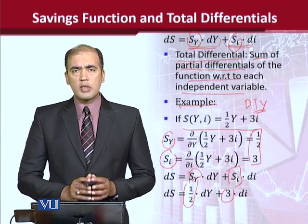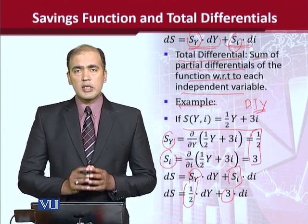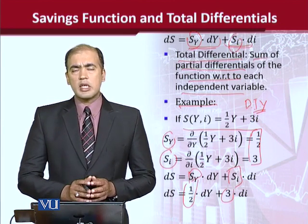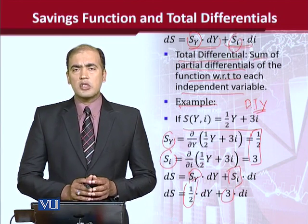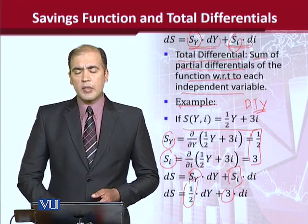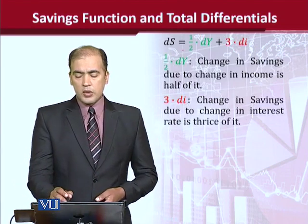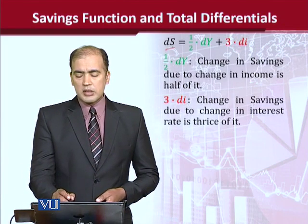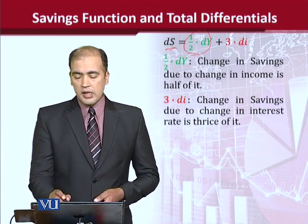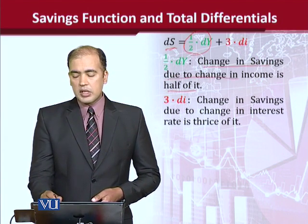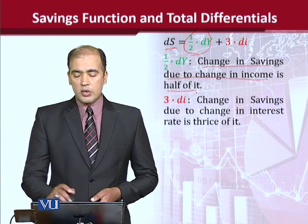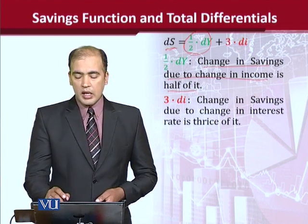In this way, we are able to develop an expression that guides us on how national income and interest rate contribute to changes in savings. To see in more detail: the change in savings due to income is the half of it. So you can read that change in savings due to change in income is half — because you can see it is a half expression.